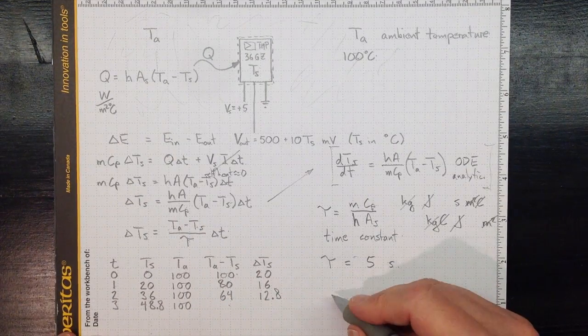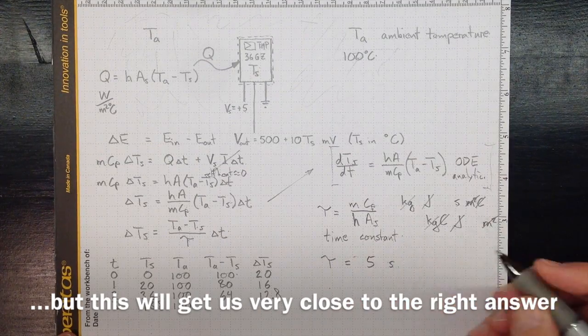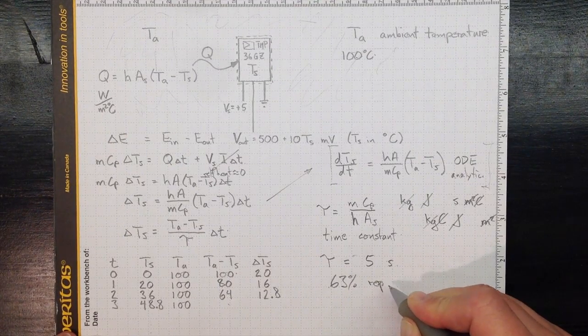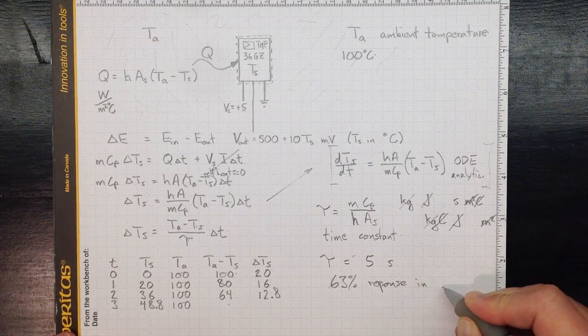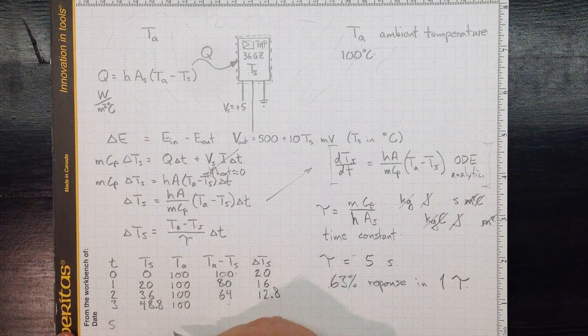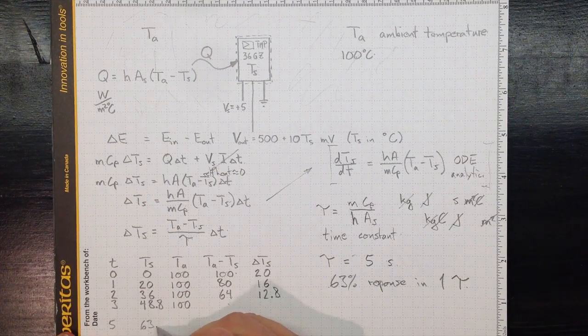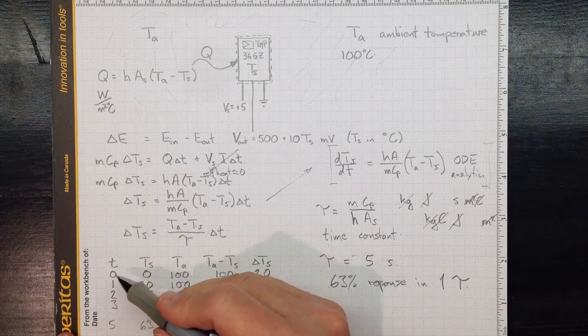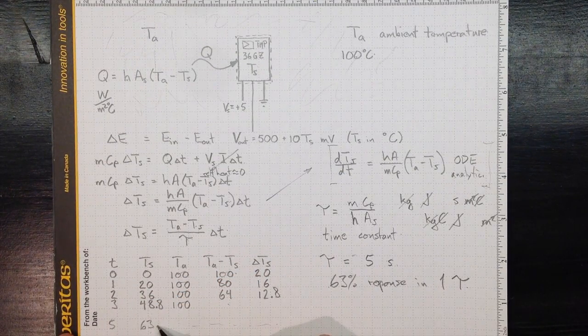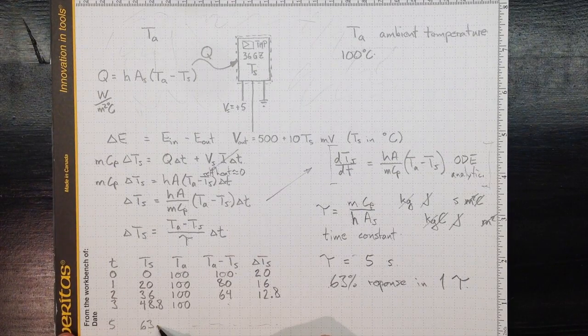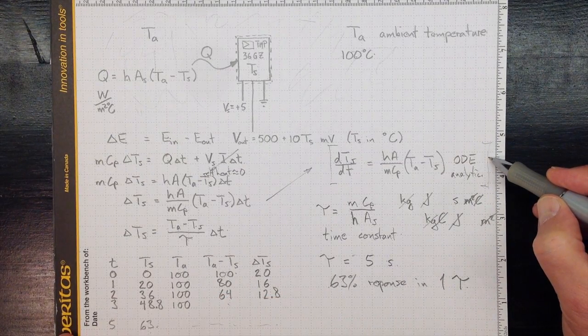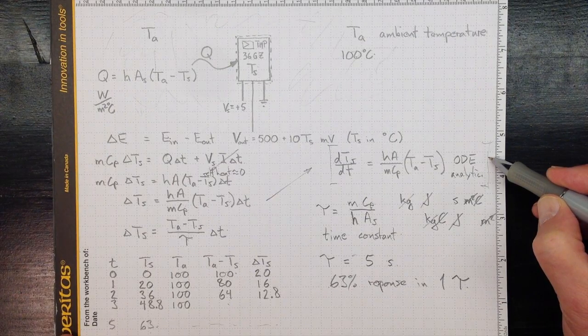So that by the time we get to 5, this should be up to 63 degrees, give or take. Now because we only took really coarse time steps here, one second time steps, we may be off a little bit by doing our solution. So if I wanted a better answer, I'd take a smaller delta T, or I would go and do an analytical solution of the ordinary differential equation.